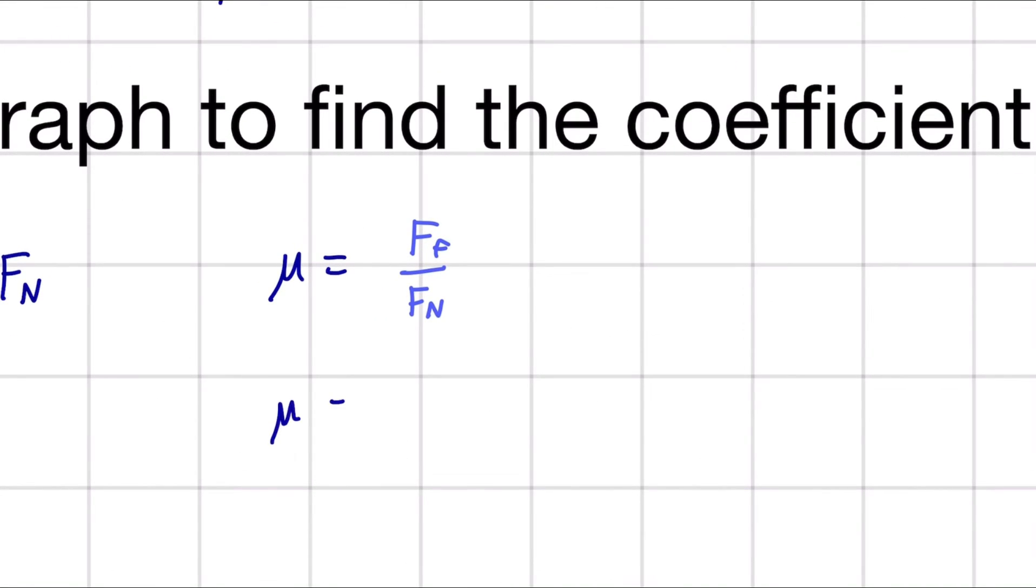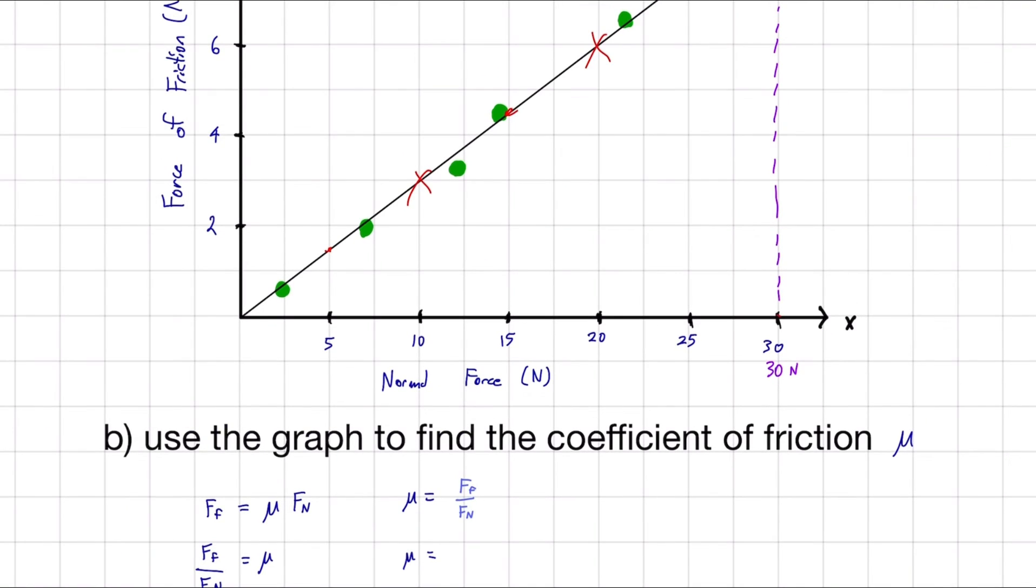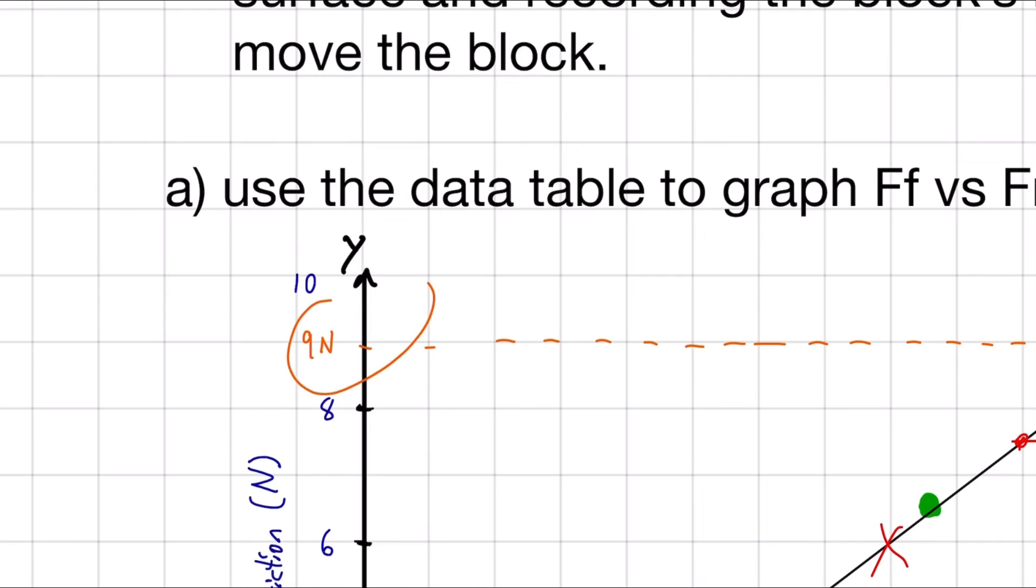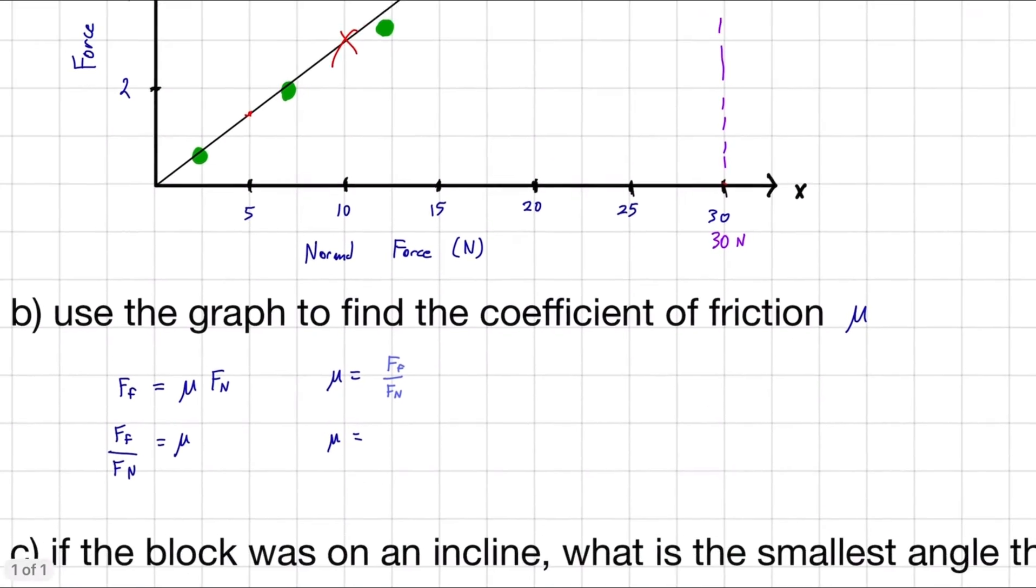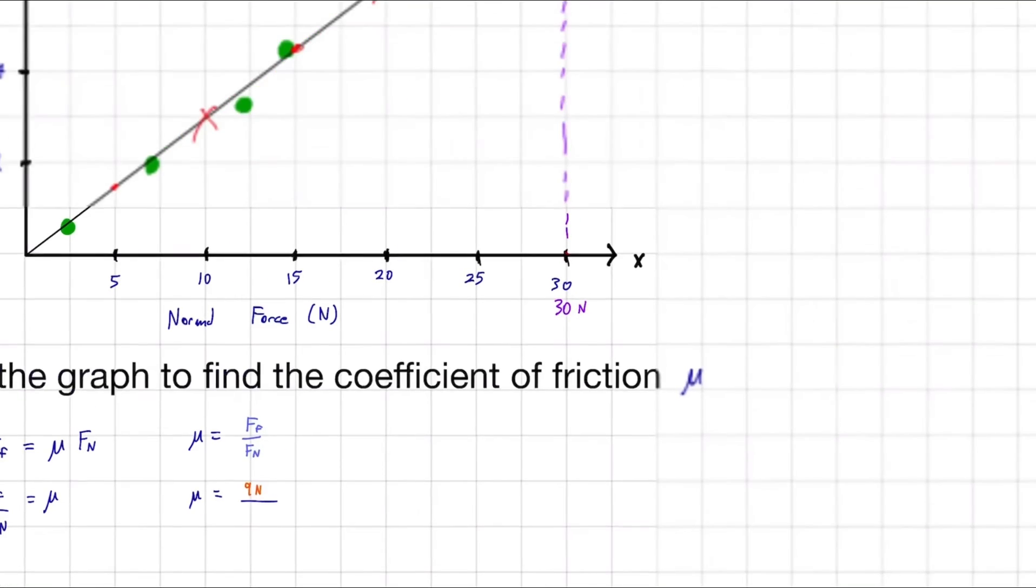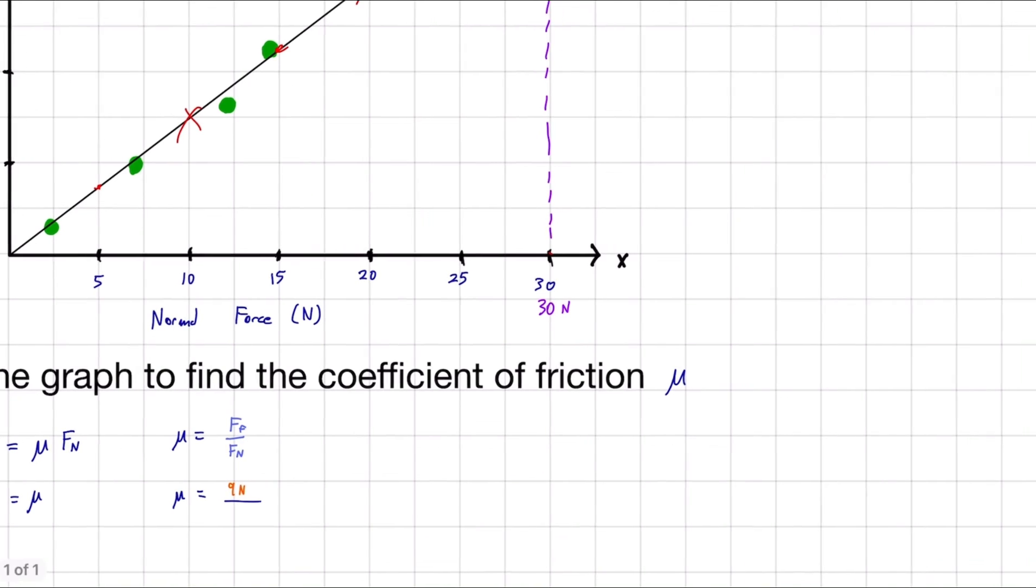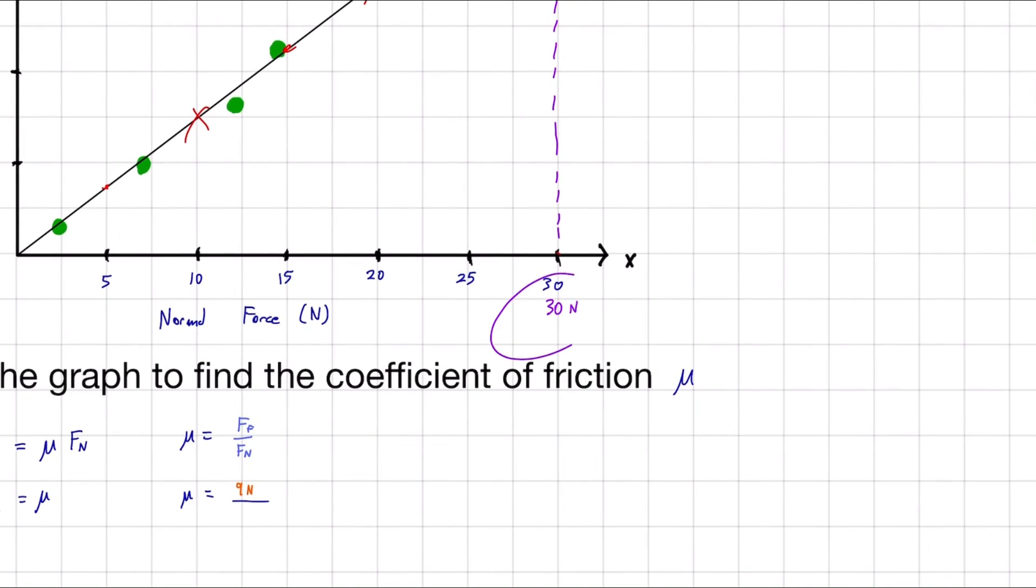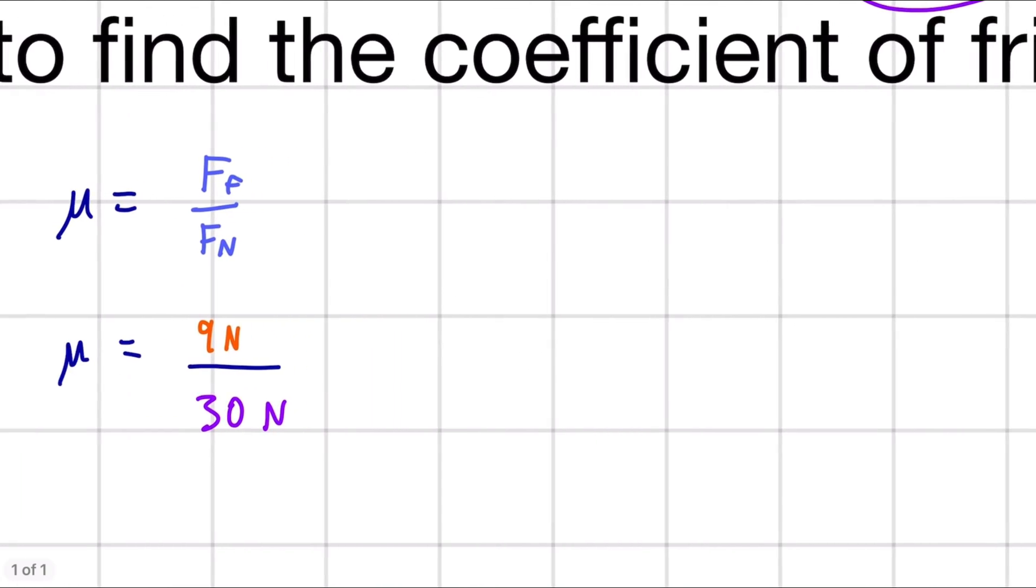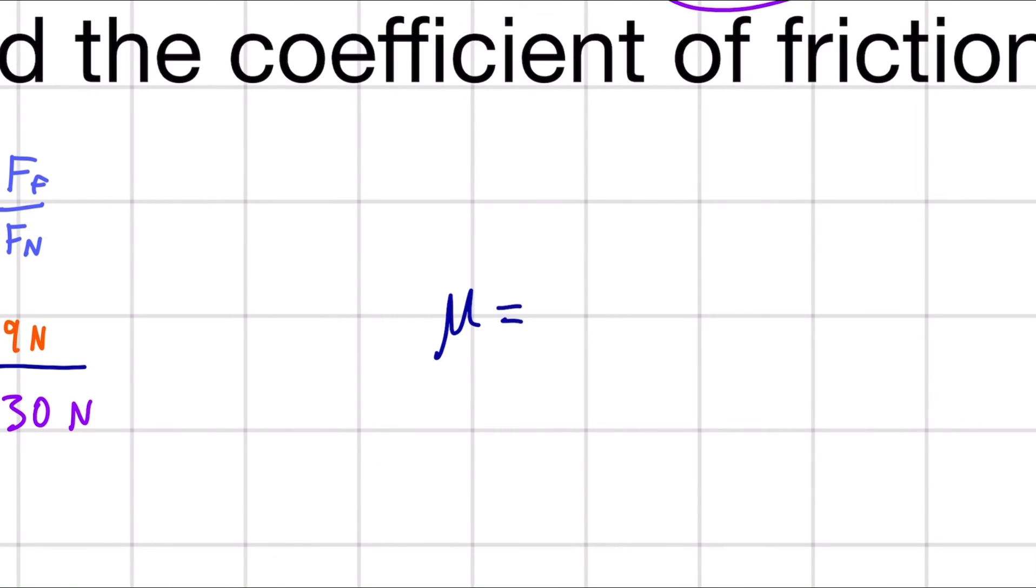So mu is equal to, remember, force of friction. What's our force of friction? This is 9 newtons. So 9 newtons. And it's divided by the normal force. Our value is 30 newtons. So 9 newtons over 30 newtons. When we put this into our calculator, that tells us that mu is equal to 0.3. And that's going to conclude this video.